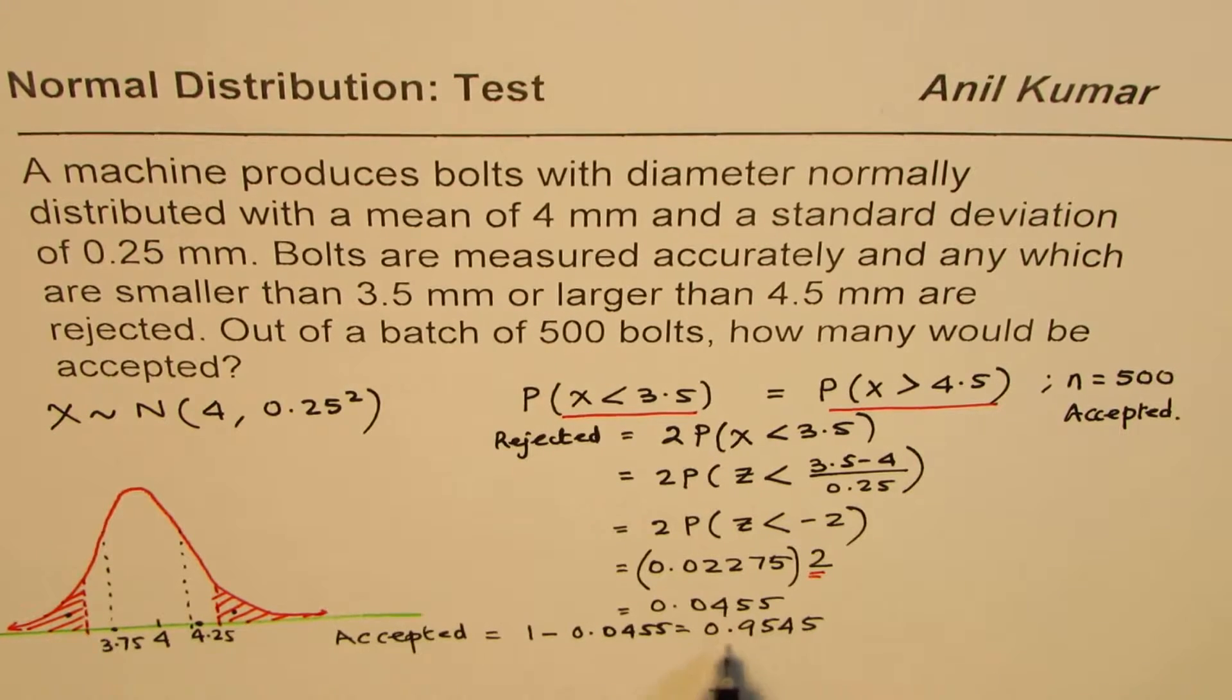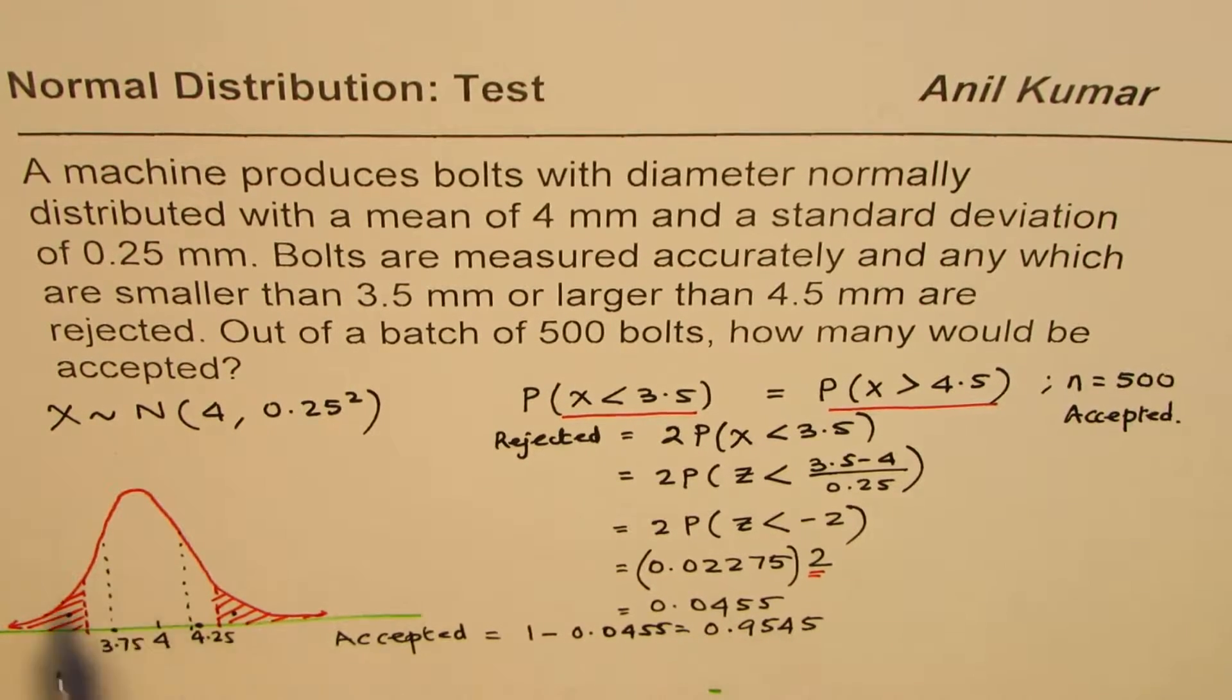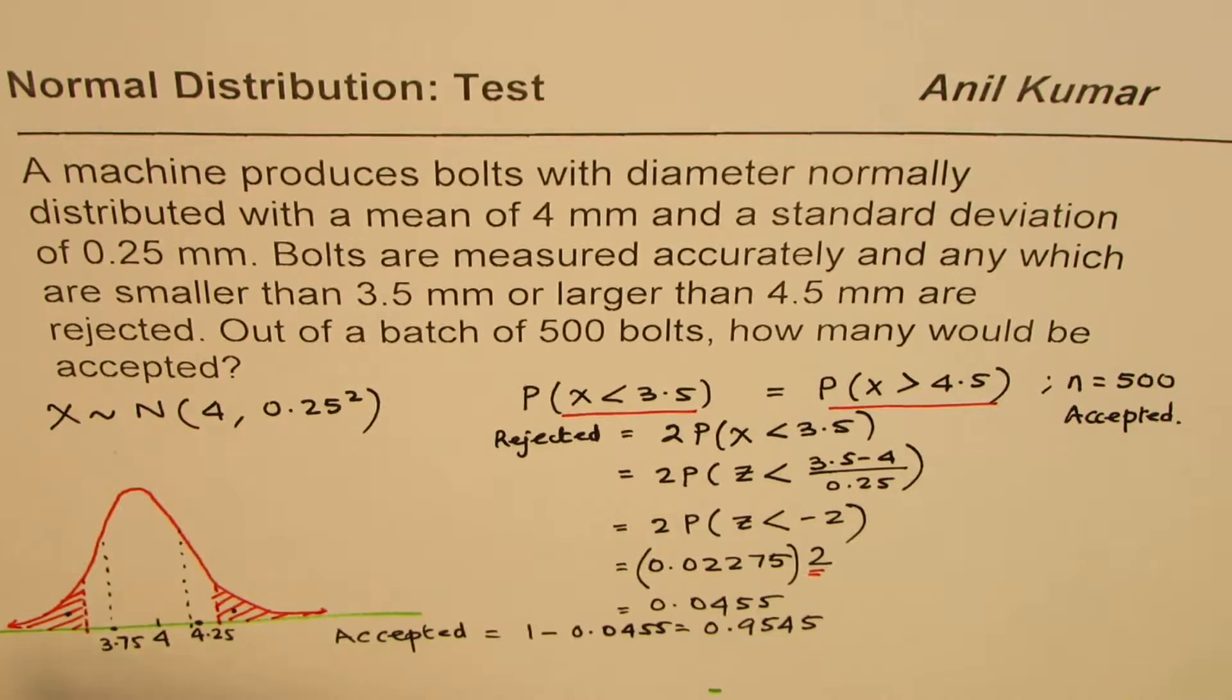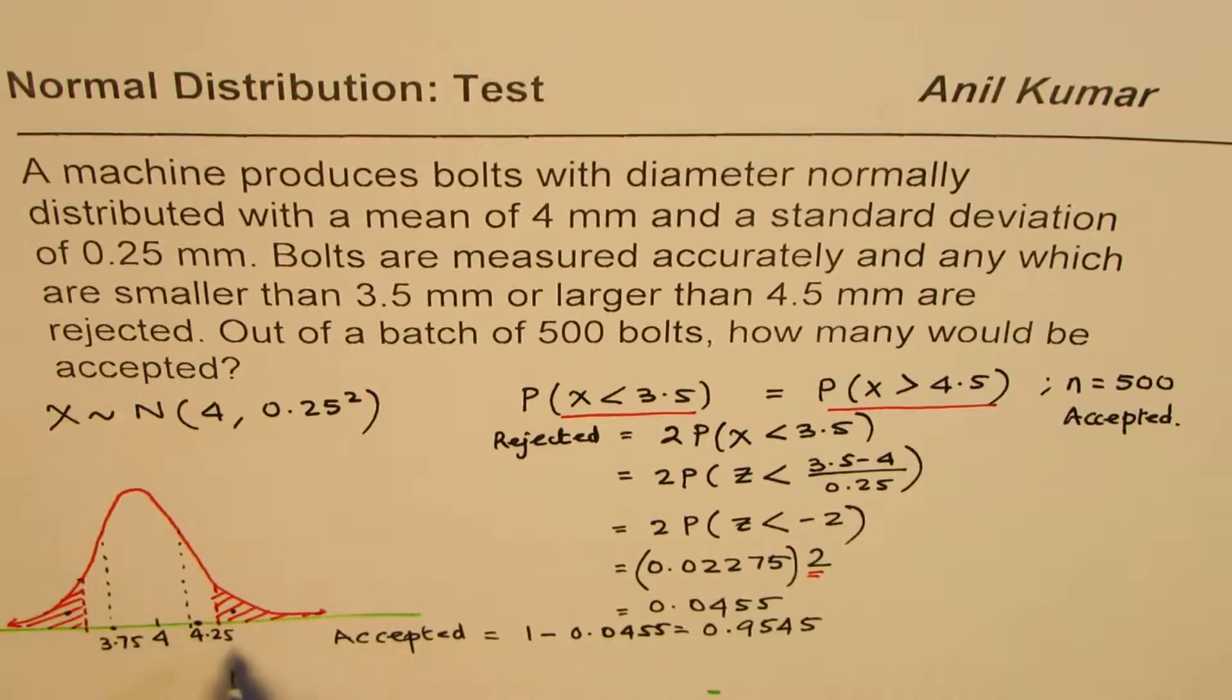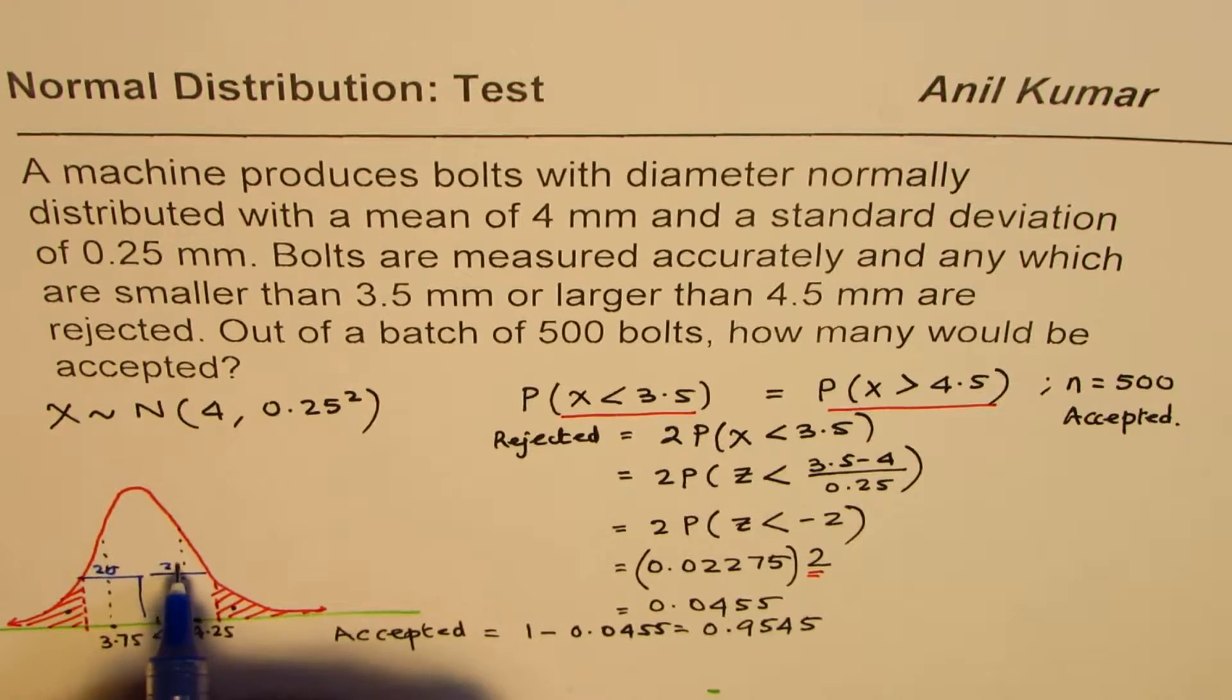Does it make sense to you? It's a very large number. Of course it does make sense because if you check, these points are actually speaking 2 sigma away. These points are 2 sigma away from the mean, do you see that?